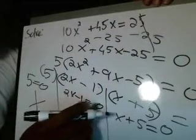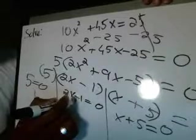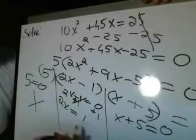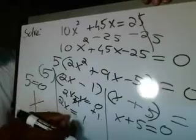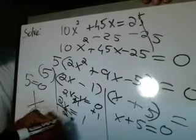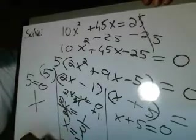Next here, you have 2x minus 1 equals 0. You want to solve for x. You want to isolate the intruder, which is negative 1. To isolate him, you add the opposite. Plus 1, plus 1. 2x equals 1. What you do on this side, you do on the other side. You guys know this by now. And you have 2x equals 1. You want to solve for x. Divide by 2. Divide by 2. x equals 1 half.